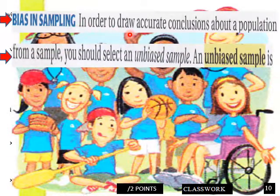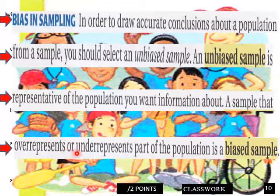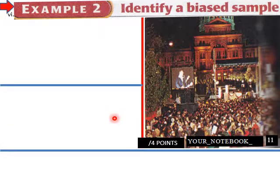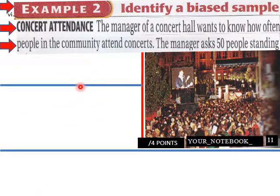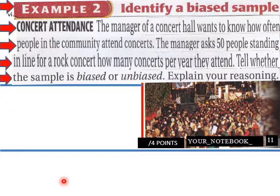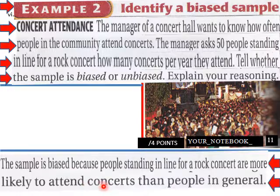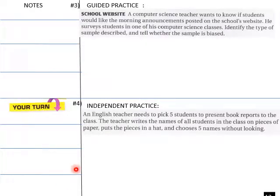Bias in sampling: in order to draw accurate conclusions about a population from a sample, you should select an unbiased sample. An unbiased sample is representative of the population you want information about. A sample that over-represents or under-represents part of the population is a biased sample. For example, a manager of a concert hall wants to know how often people in the community attend concerts. The manager asks 50 people standing in line for a rock concert how many concerts per year they attend. The sample is biased because people standing in line for a rock concert are more likely to attend concerts than people in general.